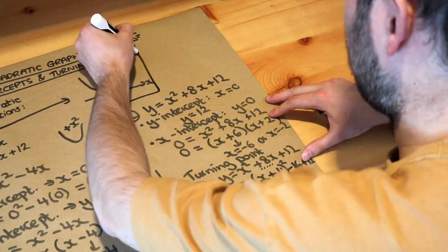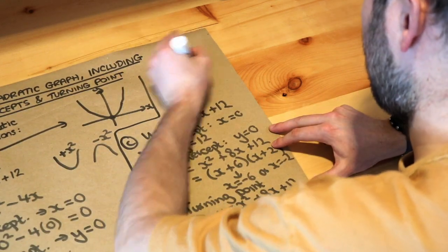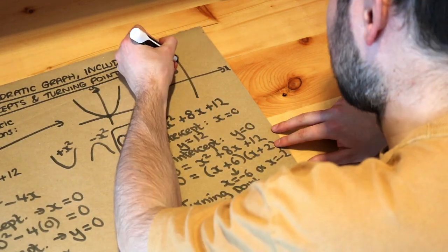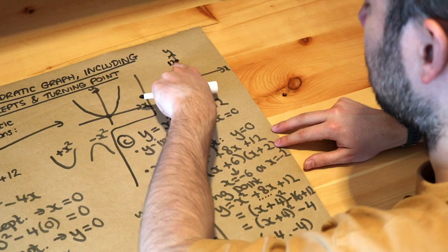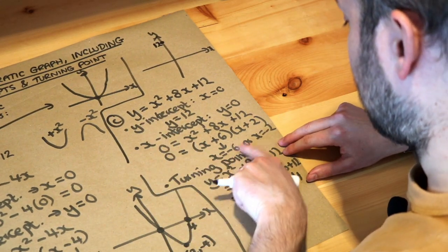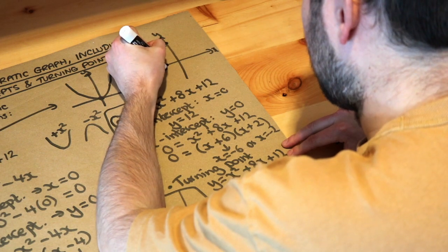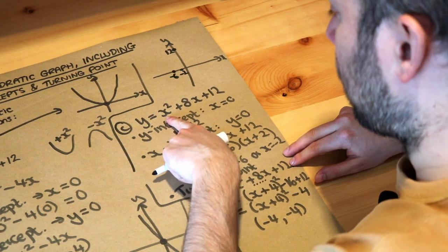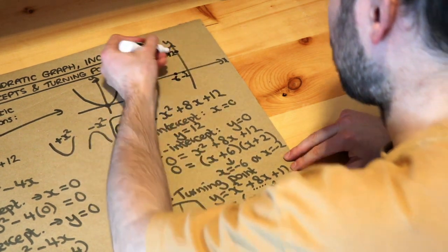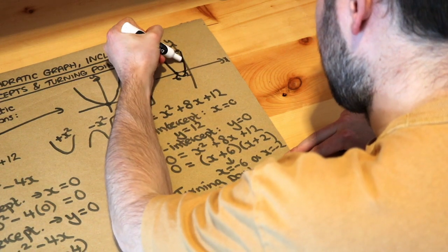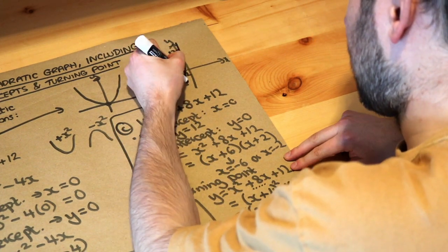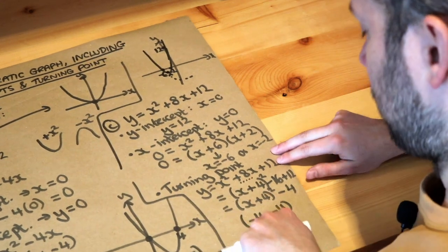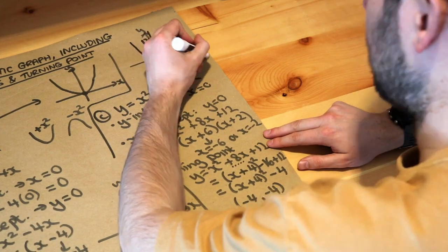Plotting all the points: when x is 0, y is 12, so we put (0, 12) as the y-intercept. The x-intercepts are at minus 6 and minus 2. Because it's a positive x squared term it's a u-shape, and the turning point is (minus 4, minus 4). That is the final answer.